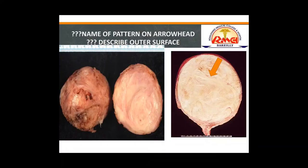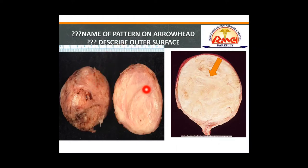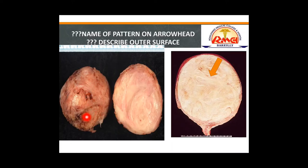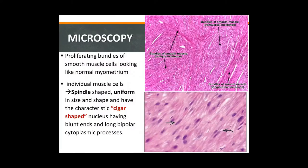To describe a leiomyoma specimen grossly: the cut surface shows a whirling pattern with bands of muscle fibers, and the outer surface is well encapsulated, smooth, with focal areas of hemorrhage. On the arrowhead, the muscle fiber bundles show the characteristic whirling pattern. This is how you describe these specimens in practical examinations.